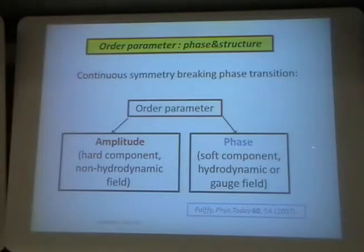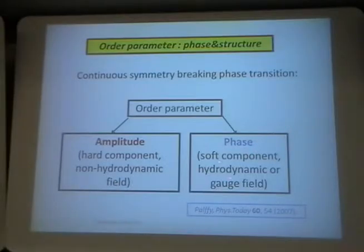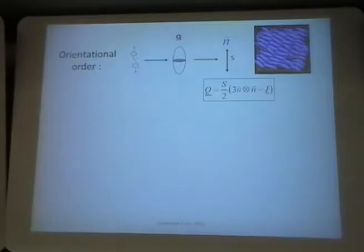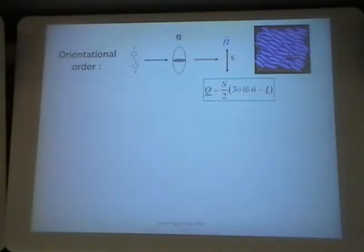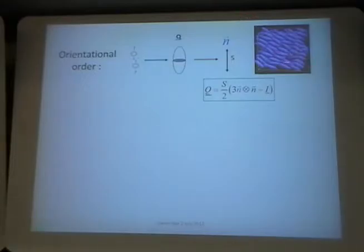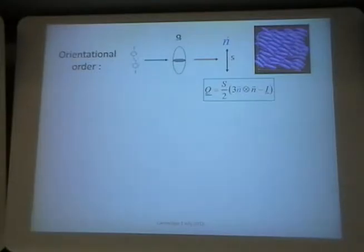The gauge field, in contrast to the amplitude, has infinitely many possible realizations. For example, if you have an isotropic-nematic transition, you introduce the Q-tensor order parameter, which has two components. One is the gauge component — it tells how the symmetry is broken. In a nematic liquid crystal bulk phase, molecules should be parallel-aligned, but they could be aligned in this direction, or in this direction, or in this direction. You have infinitely many possibilities — it is the gauge parameter that tells you which direction is selected.